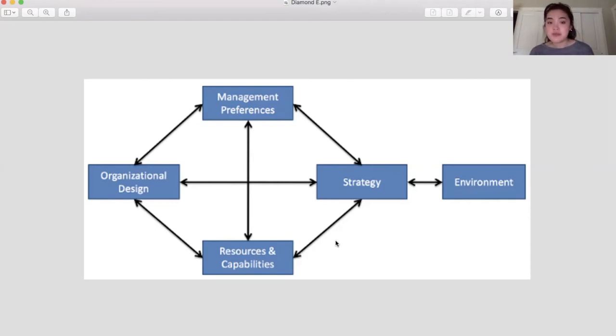Another component of the Diamond E Framework are the double arrows in the diagram. This is to demonstrate how each component is linked to one another and can influence one another. You can see that the arrows go both ways because influence moves in both directions. For example, each variable can either drive strategy or strategy can drive the variables. Because of this, changes in one variable will most likely affect all other variables.